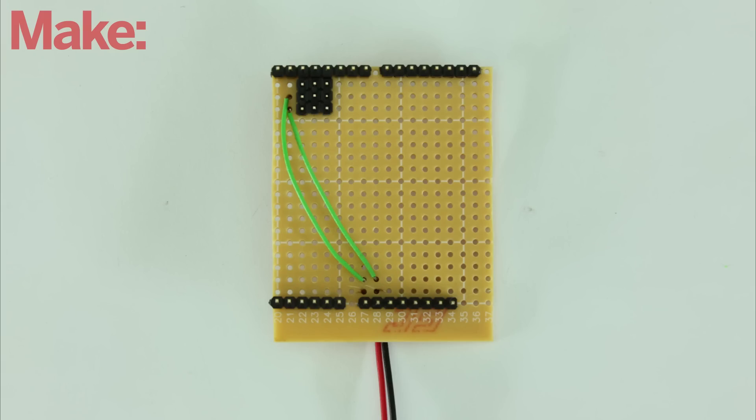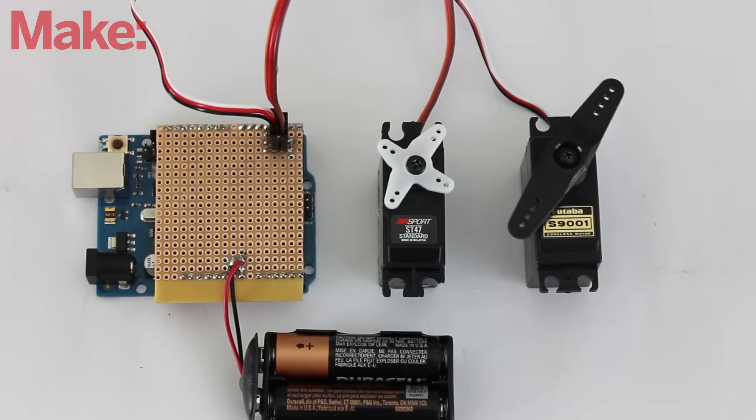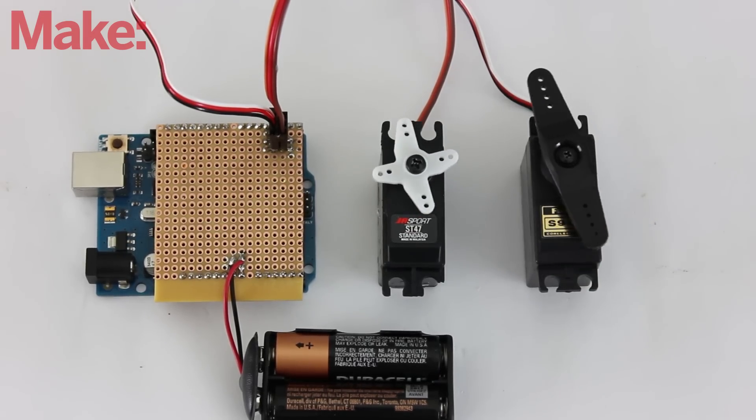The pin that corresponds to the positive wire will be connected to the VN pin on the board. And the pin that corresponds to the negative wire will be connected to ground on the board. This gives you a basic servo shield. You can use this design to control as many servos as you have digital pins.